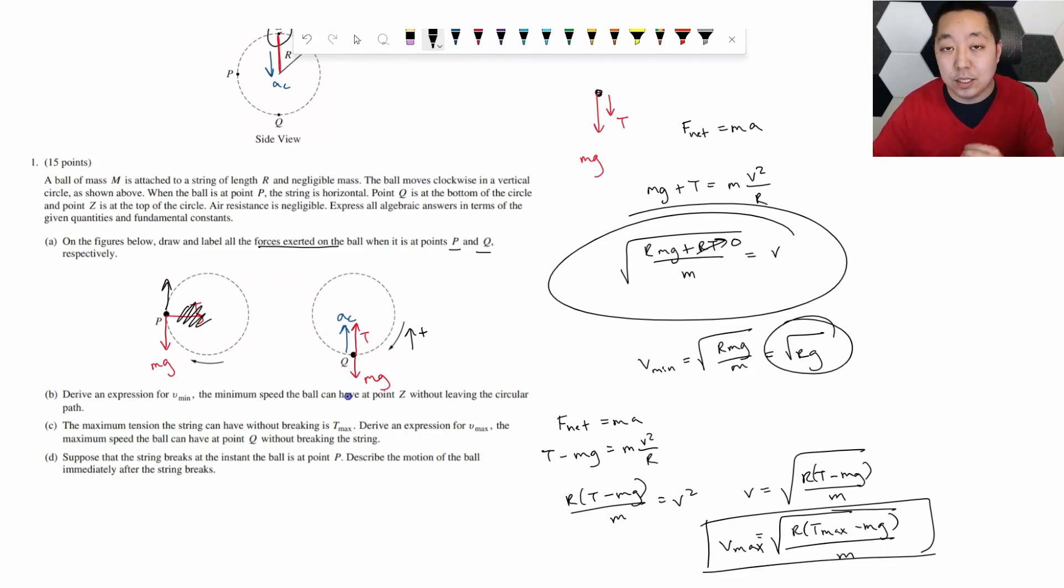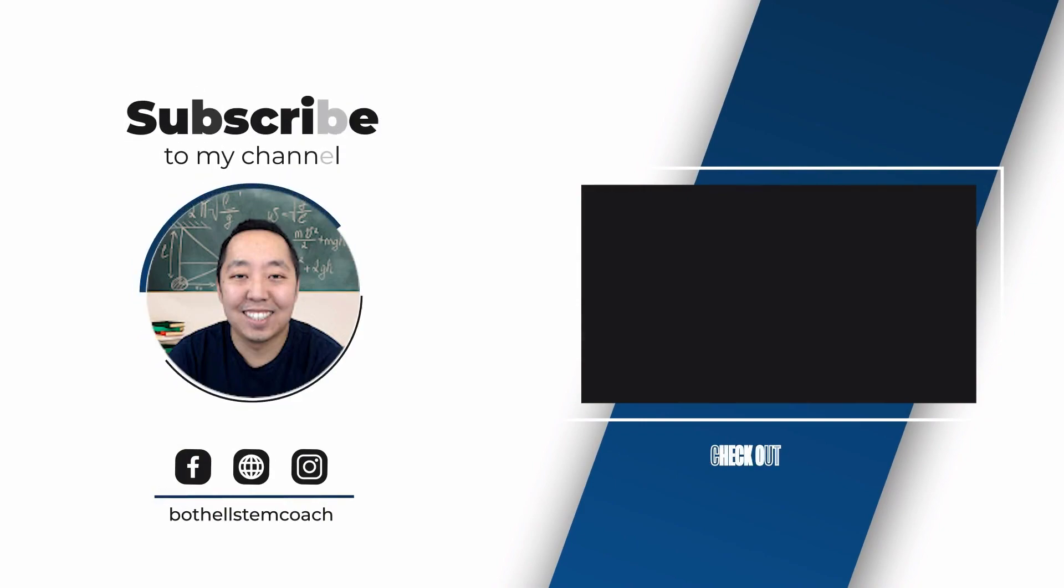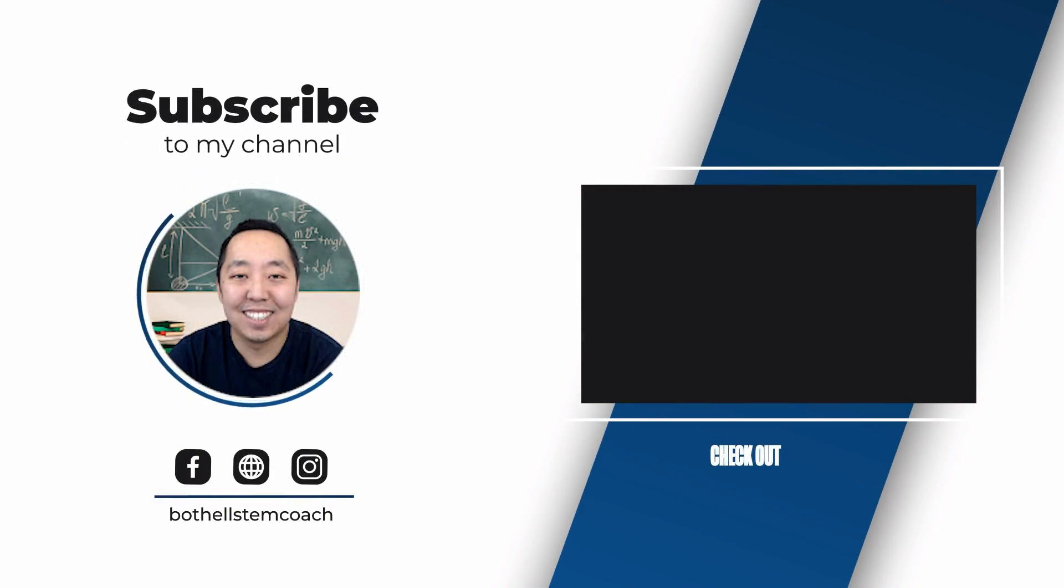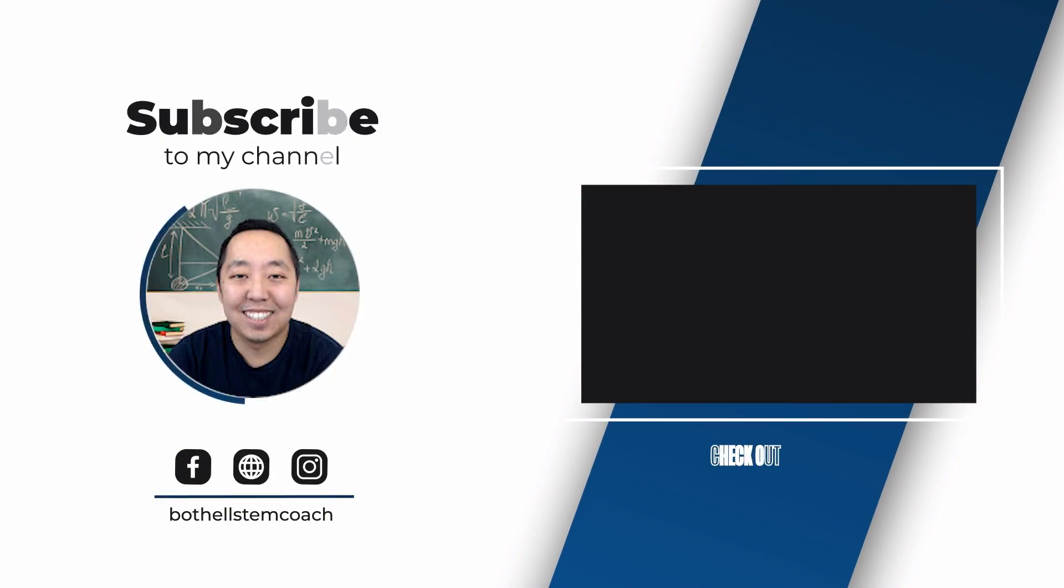But at least a, b, and c were the big parts I wanted to review with you guys. So just keep in mind that process. Draw that free body diagram. Do f net equals ma, just that the a might be v squared over r, and it's directed towards the center of the circle. Draw that free body diagram.